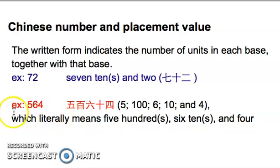Another example, 564. So 100th unit, the tenth unit, and the single unit. So would be, there's five hundred, and then six tens, and then a four. So it literally means five hundred, so wu bai, six tens, liu shi, and four, and then si. So wu bai liu shi si will be the written form of five hundred and sixty-four in Chinese.